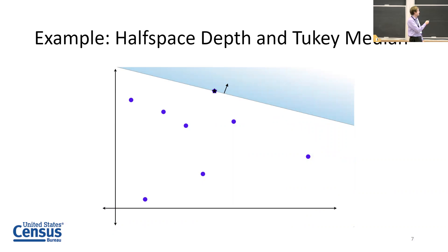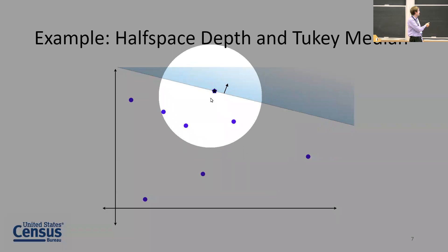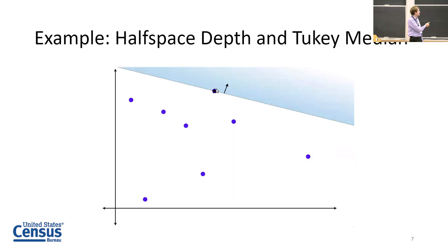As another example here, this is computing the halfspace depth of this point here which coincides with the data point. In that case, every halfspace obviously will contain this data point, so the halfspace depth will be one in this case.